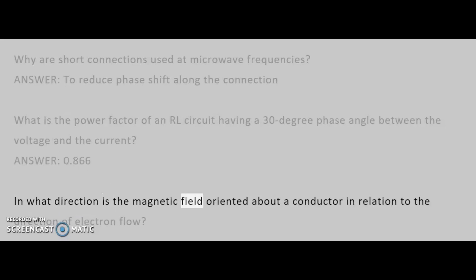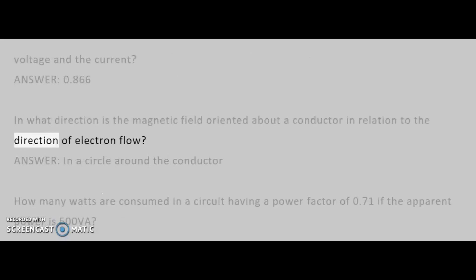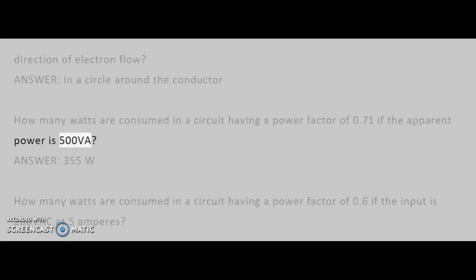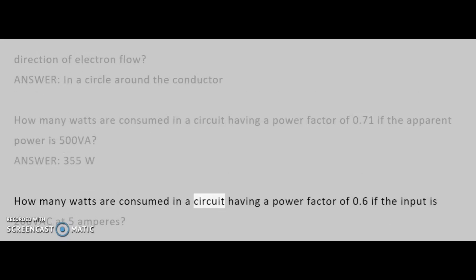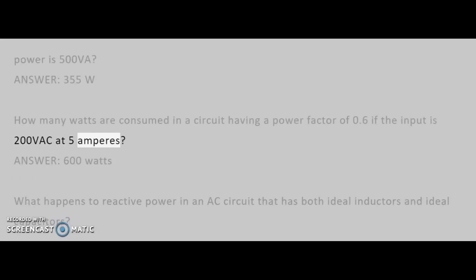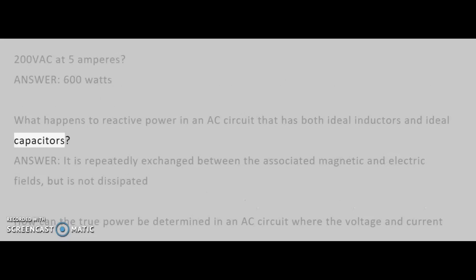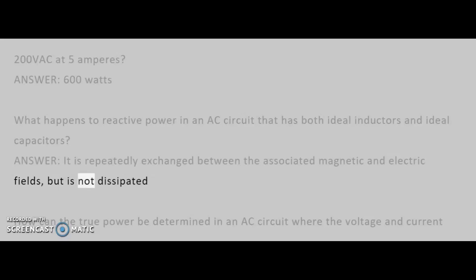In what direction is the magnetic field oriented about a conductor in relation to the direction of electron flow? Answer: In a circle around the conductor. How many watts are consumed in a circuit having a power factor of 0.71 if the apparent power is 500 VA? Answer: 355 W. How many watts are consumed in a circuit having a power factor of 0.6 if the input is 200 VAC at 5 amperes? Answer: 600 watts. What happens to reactive power in an AC circuit that has both ideal inductors and ideal capacitors? Answer: It is repeatedly exchanged between the associated magnetic and electric fields, but is not dissipated.